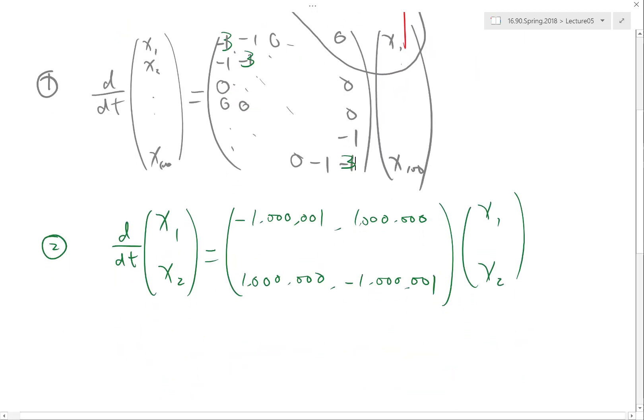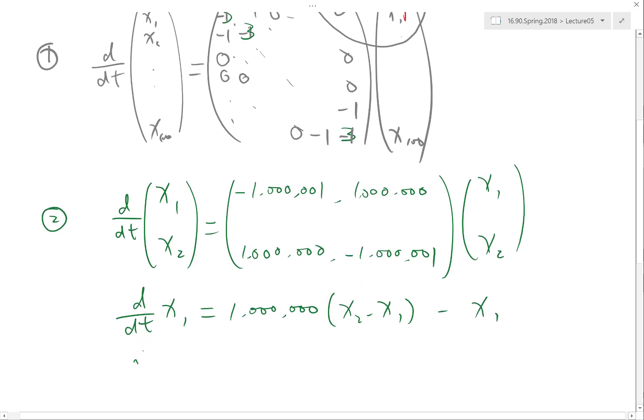So that's the real problem about the second system. If you write it down, it's basically d/dt of x1 is equal to a million times (x2 minus x1) minus x1. The difference between x1 and x2 gets vanished very quickly, but the evolution of the whole is going to take its time.